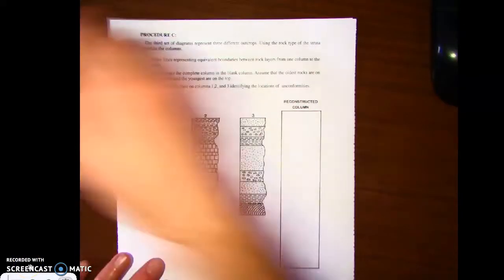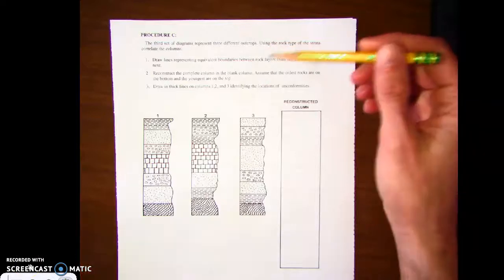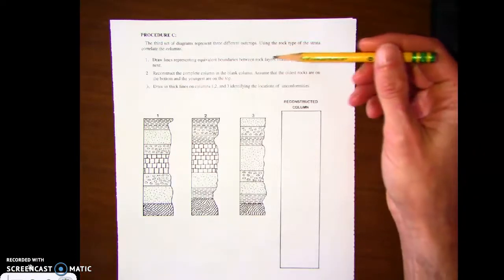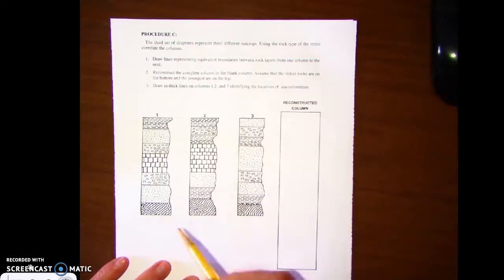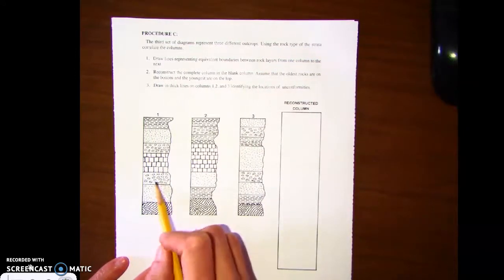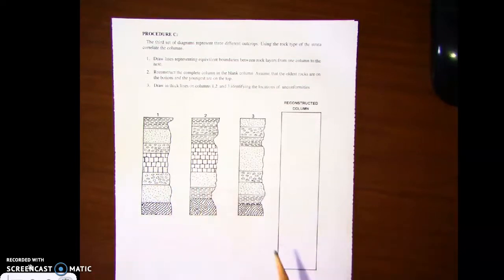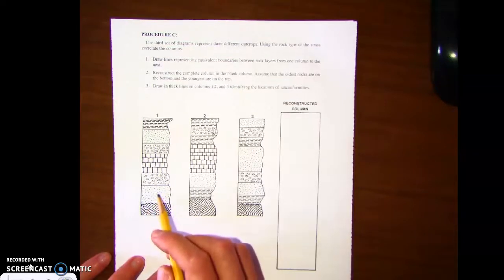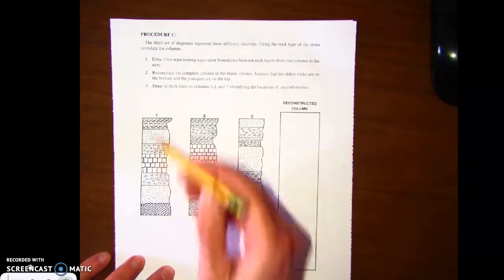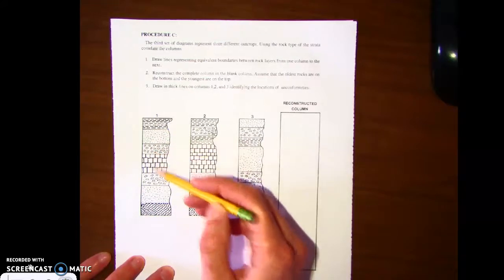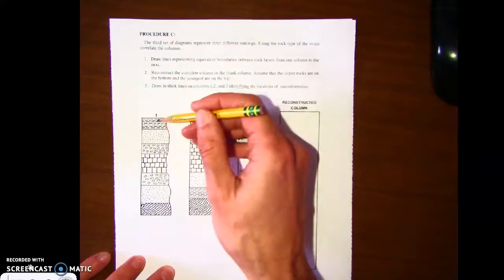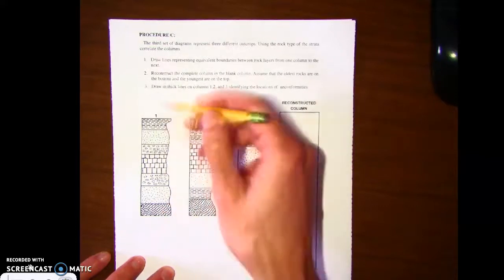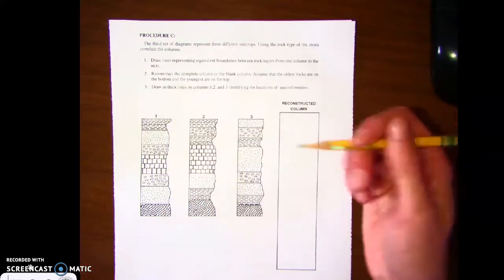Okay, so let's finish up this lab. We're on procedure C now. Again, look at the other videos from procedure A and B. Let's take a look at procedure C. Similar concept, we have three different columns of rock. These could be cliff faces, or where rock was blasted to make a road or railway, and we can see what the rock layers look like from the side. It also could be holes drilled down to see what rocks and fossils are found deep down.